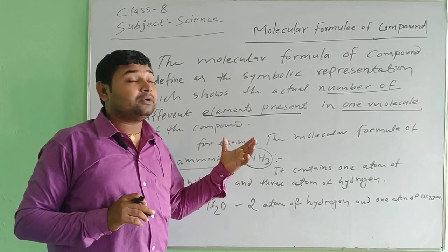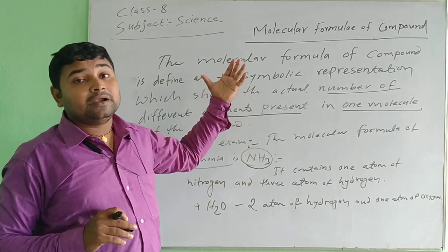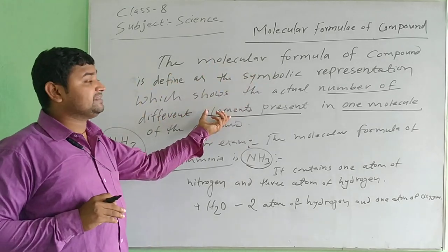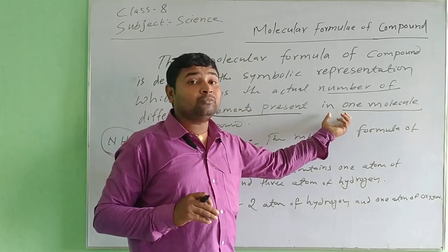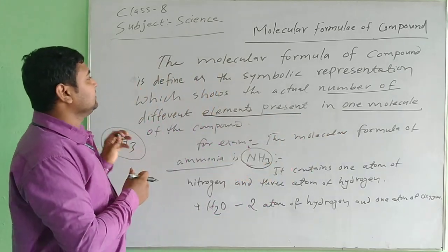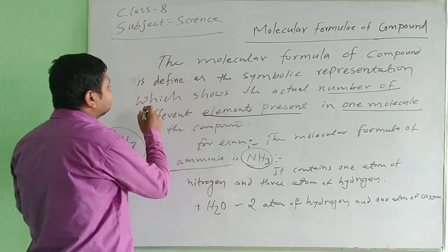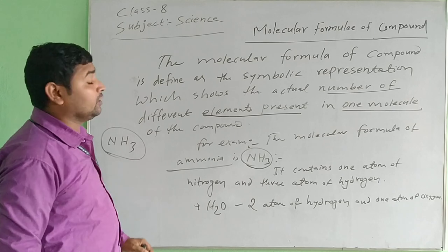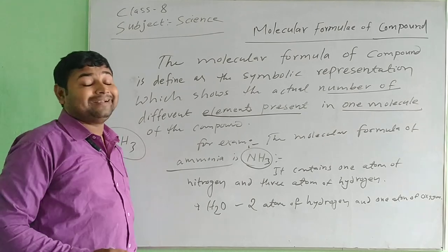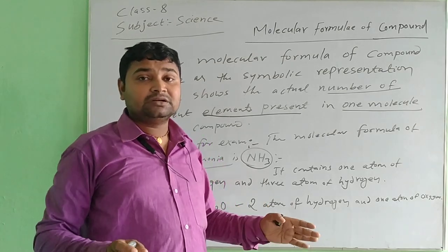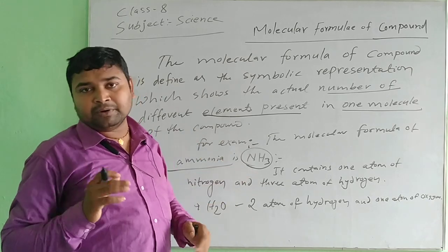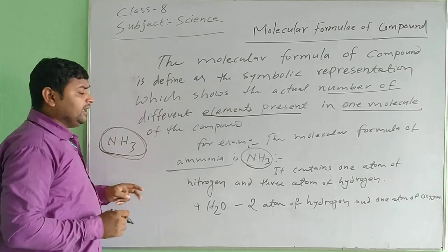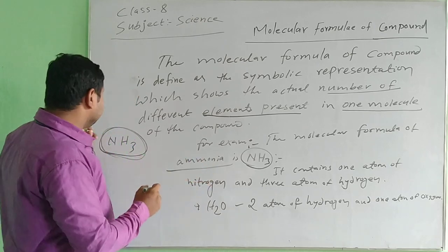In the previous topic, we talked about elements where the number of atoms of the same element is present. But here, in a compound, it is the number of different elements present in one molecule. So remember this difference. The symbolic representation shows the actual number of different elements in one molecule of a compound, because a compound is formed by the combination of different types of elements — like the example of ammonia, NH3.